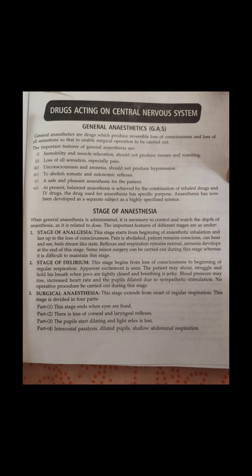For acute gout, we can use NSAIDs, corticosteroids, and colchicine. For chronic gout associated with hyperuricemia, we use uricosuric drugs and xanthine oxidase inhibitors. Uricosuric drugs include probenecid and sulfinpyrazone, and the xanthine oxidase inhibitor used is allopurinol.